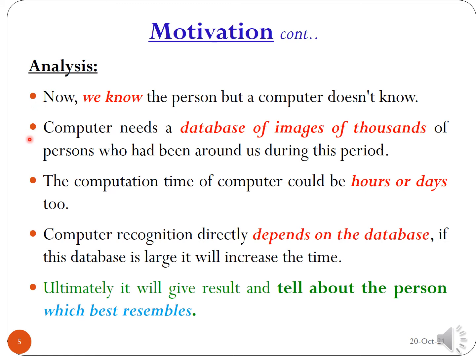We know the person, but a computer doesn't. A computer needs a database of images of thousands of persons who had been around us during that period. The computation time of a computer could be hours or days, depending on the size of the database — if it spans 20 years, it could increase further. Computer recognition directly depends on the database, and ultimately it will give a result telling which person best resembles the stored images.